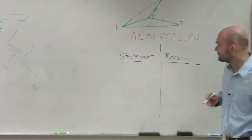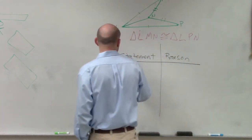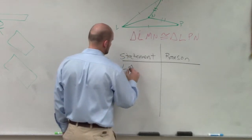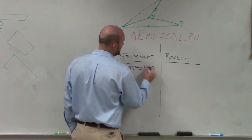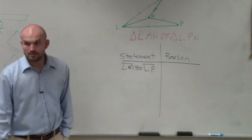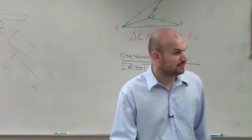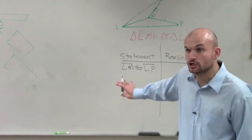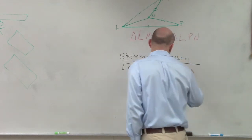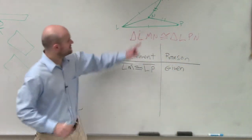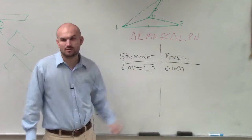So the information given is we could say line LM is congruent to line LP. Those are congruent lengths. Remember we talked about that in the beginning of class. They are congruent. Why are they congruent? Because that information is given to us. How is it given to us? They show us that these two lengths are equal in measure.